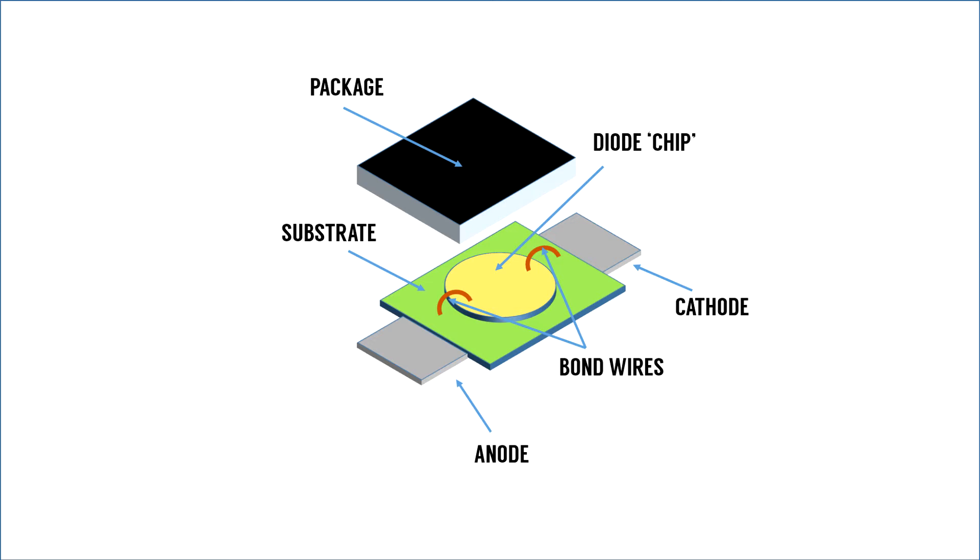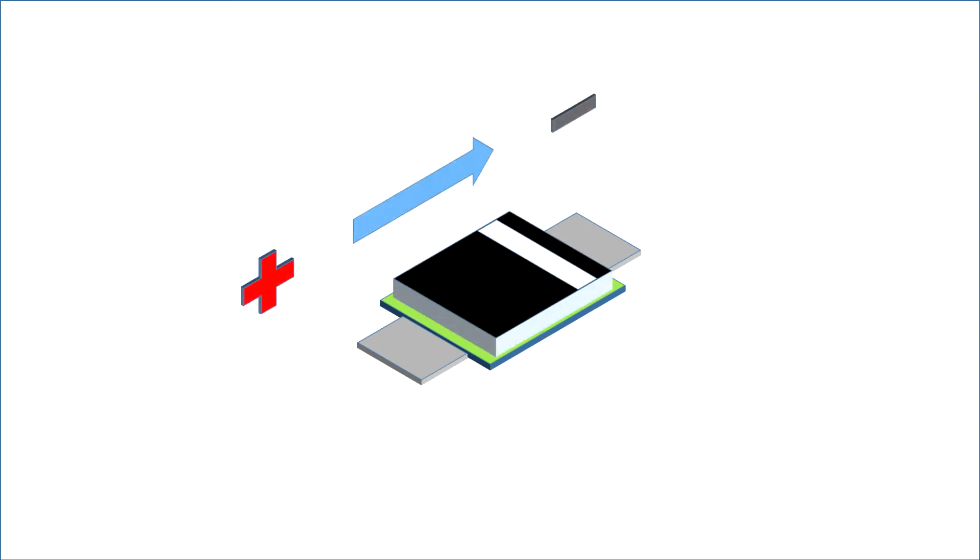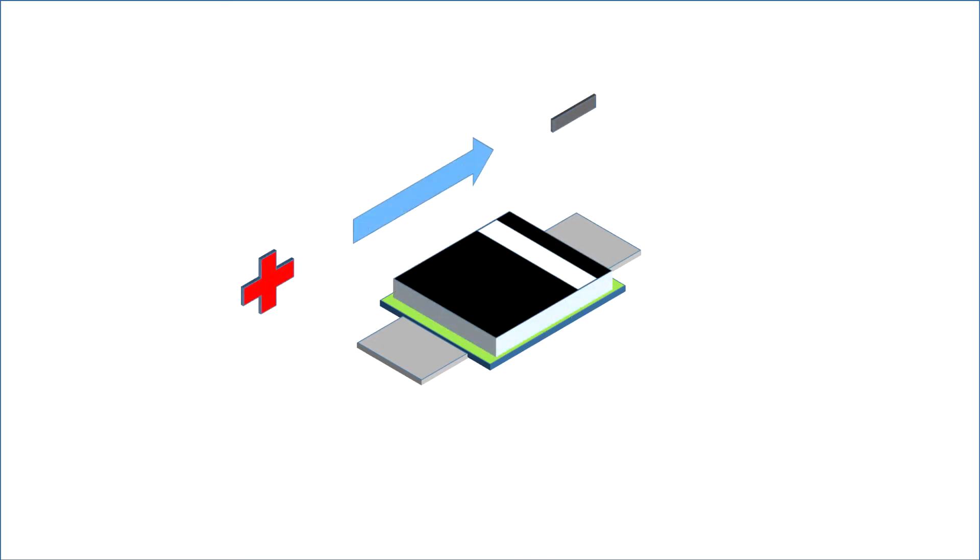When you apply a forward bias voltage the silicon junction will conduct and pass the energy through with minimal losses. So you do have some voltage drop which is typically around 0.7 volts when you forward bias the diode.